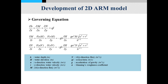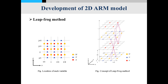Here are the governing equations to simulate the movement of stormwater on the surface. I use the two-dimensional continuity equation and two-dimensional momentum equation. A flux method is applied using a staggered grid, and this figure shows the location of each variable and the concept of the flux method — it is a very general method.